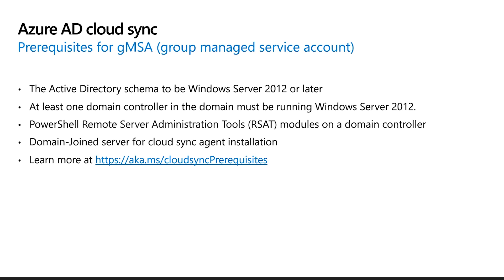To support GMSA, there are new prerequisites needed. The Active Directory schema in the installing domain's forest needs to be updated to Windows Server 2012 or greater to create a GMSA. At least one domain controller in the domain must be running Windows Server 2012 or higher — if not, the creation of GMSA will fail. PowerShell Remote Server Administrative Tools or RSAT modules are installed by default on domain controllers. If they were somehow removed, please ensure that all domain controllers in the domain in which the GMSA is created have PowerShell RSAT modules installed. The server where the agent is being installed must be domain joined and has to be running Windows 2016 or greater. The new requirement is that the server must be domain joined to use GMSA.